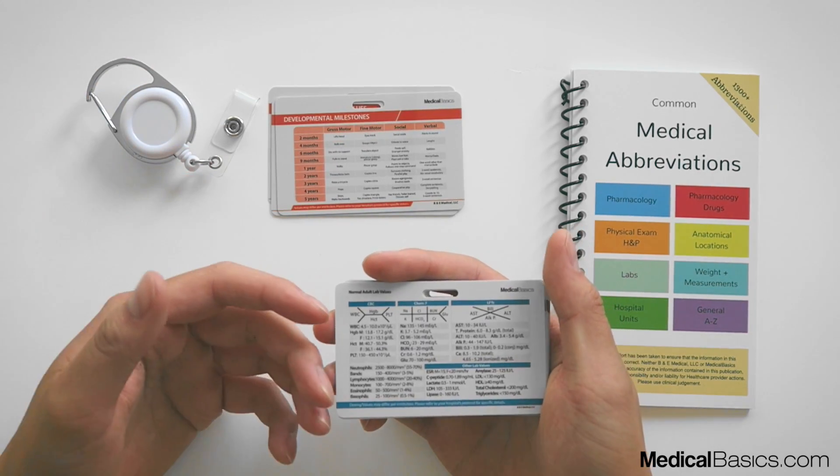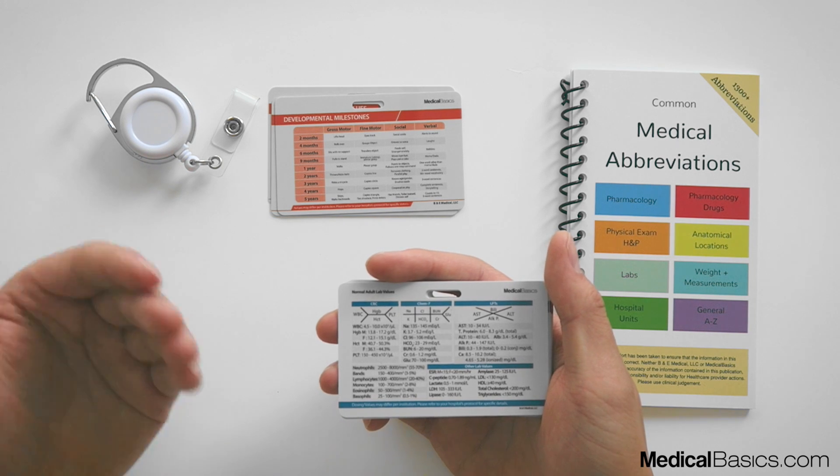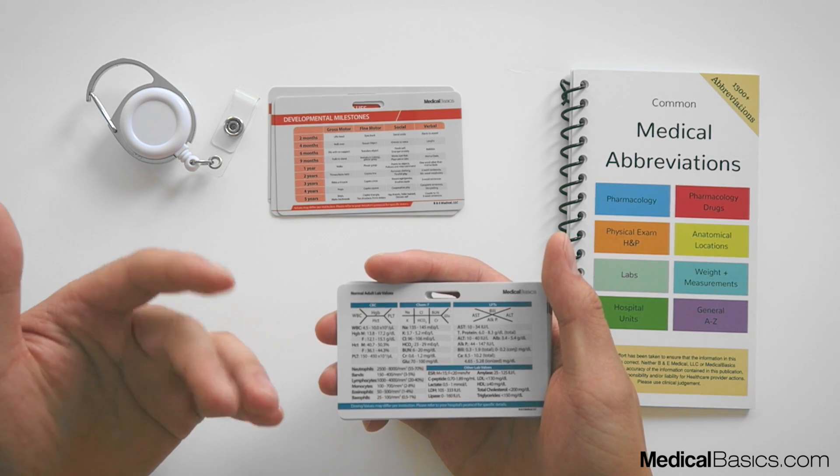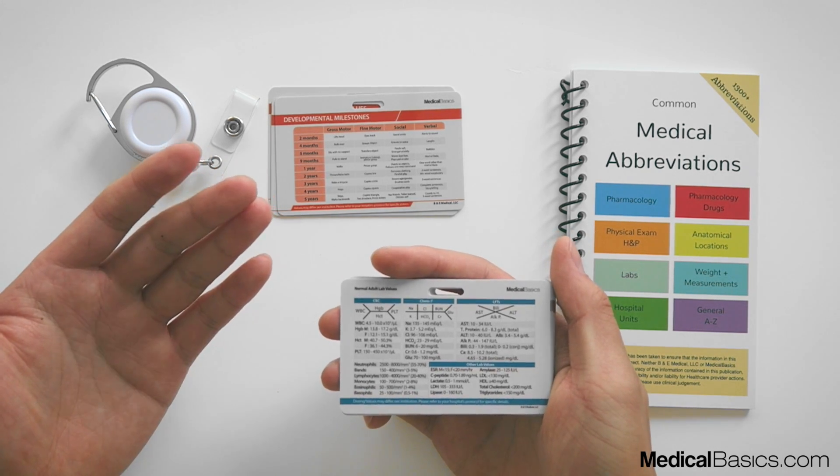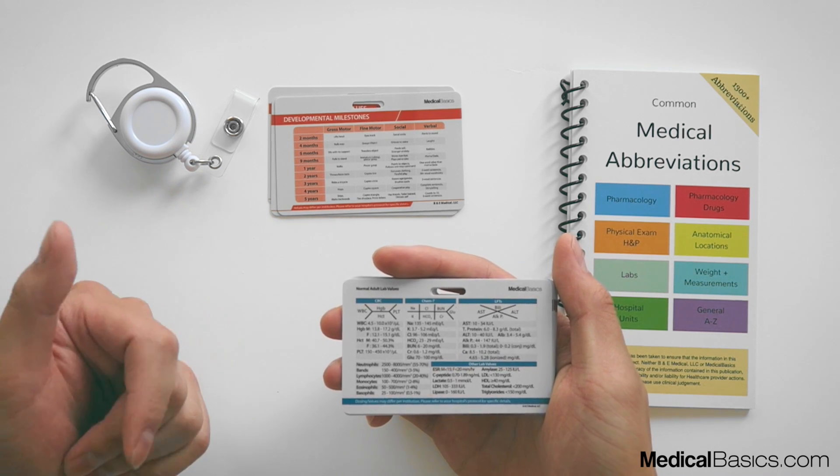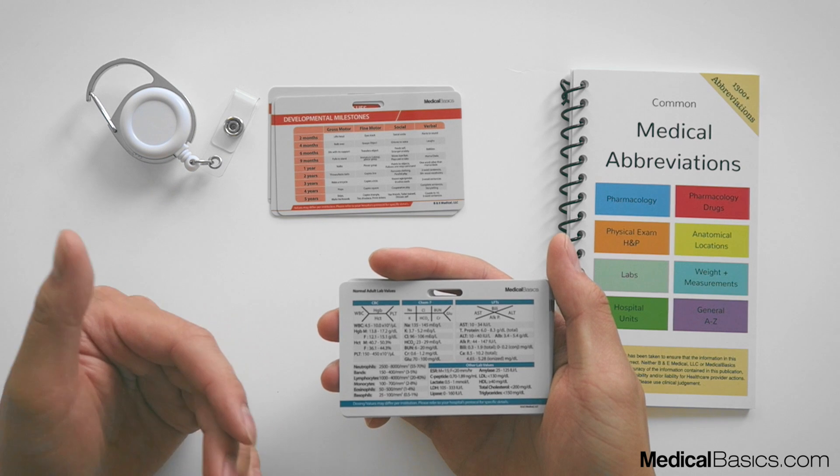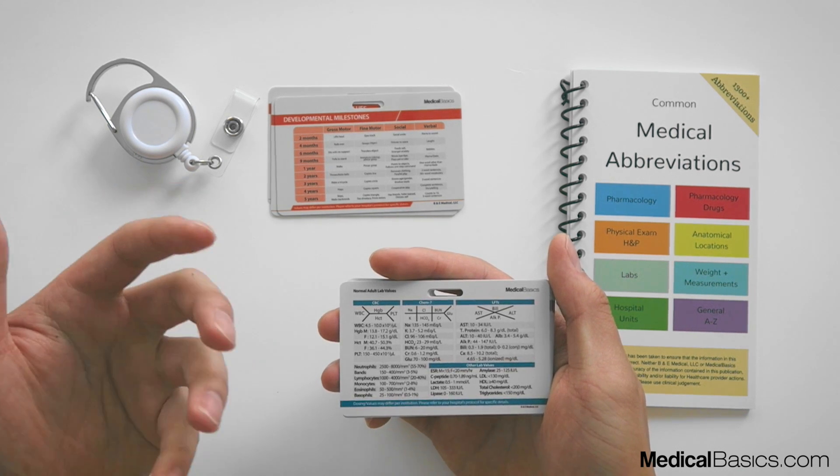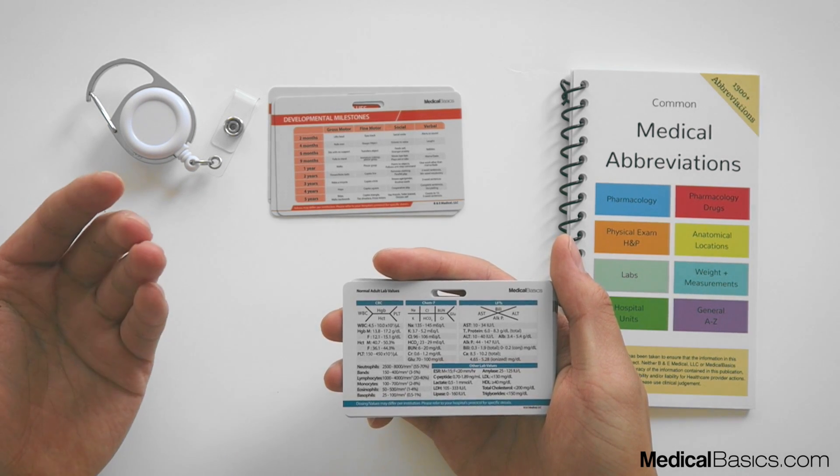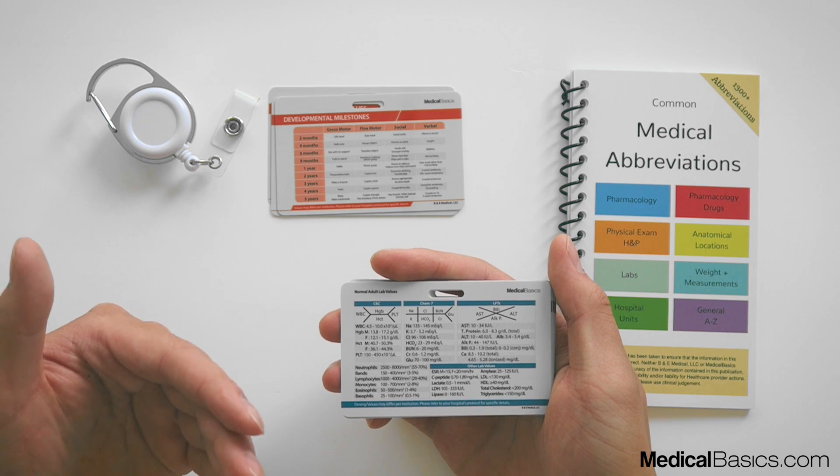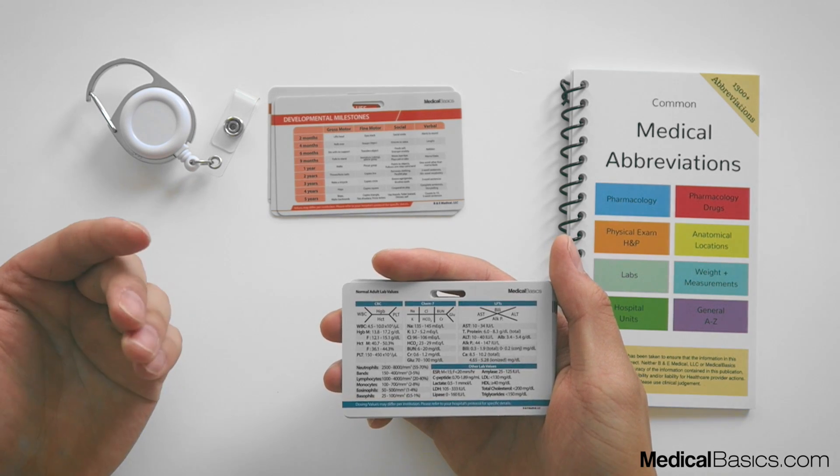And then labs especially, you'll find that as you go further into your medical education, these are no longer things that you'll need to reference, and hopefully it'll be pretty soon that you won't need to reference them. But definitely early on you'll never remember what a normal CBC looks like unless you've seen a few. And so this is a good way to kind of just have that in your back pocket when you're first starting off.